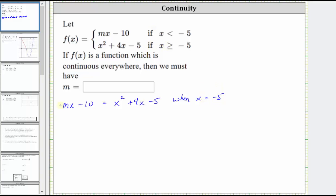And now we substitute negative five for x and solve for m. Performing this substitution gives us m times negative five minus 10 equals the square of negative five plus four times negative five minus five.